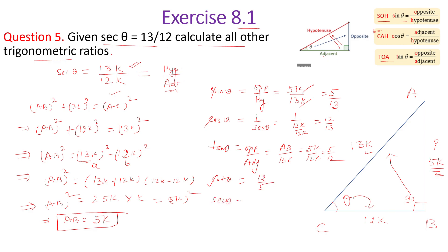Sec theta is either the reciprocal of cos or hypotenuse upon adjacent, and it was already given as 13 upon 12. Cosecant theta is hypotenuse upon opposite side: 13K upon 5K, K cancels, giving 13 upon 5. We can also say it is the reciprocal of sine, which is 5 upon 13, so cosecant theta equals 13 upon 5.